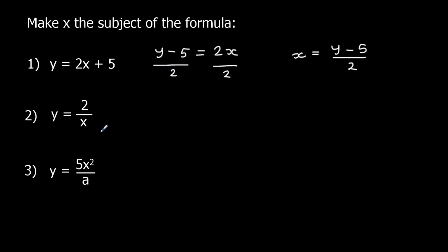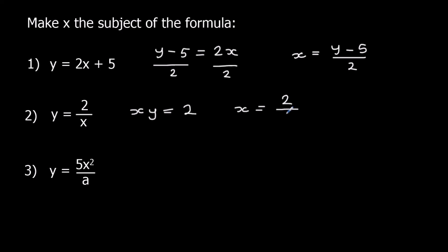Question 2: y equals 2 over x. I don't want x on the bottom, so the first step is to multiply both sides by x, which makes it xy equals 2. I've got x times y — I need to get rid of the y — so the opposite of times is divide, so x equals 2 over y. Divide both sides by y.